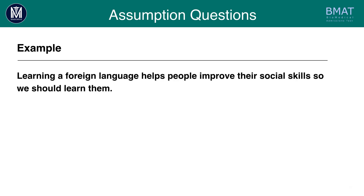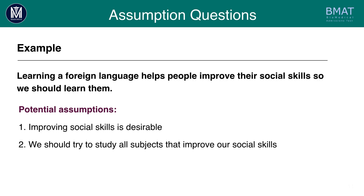Let's put this into practice. 'Learning a foreign language helps people improve their social skills, so we should learn them.' Try and think of some assumptions from this. You might have identified things like: 'Improving social skills is desirable,' or 'We should try to study all subjects that improve our social skills.' These are two potential assumptions. Now we need to verify whether they are actual assumptions using the negative test.